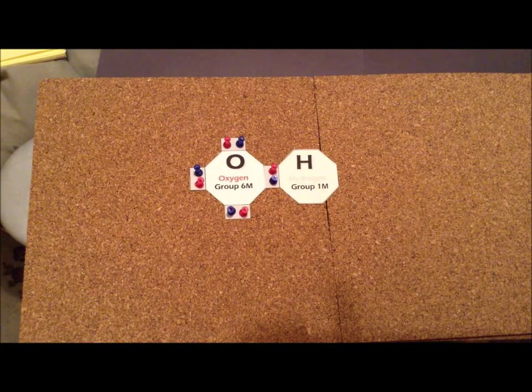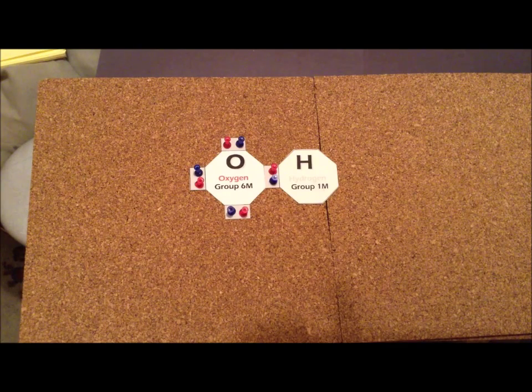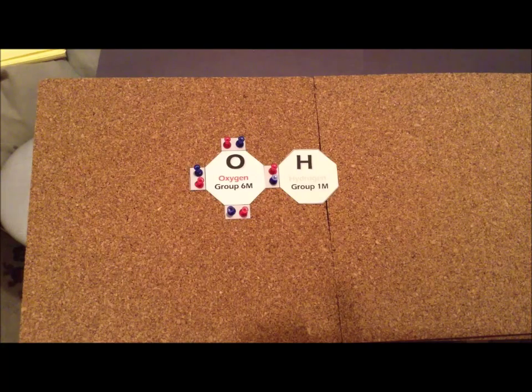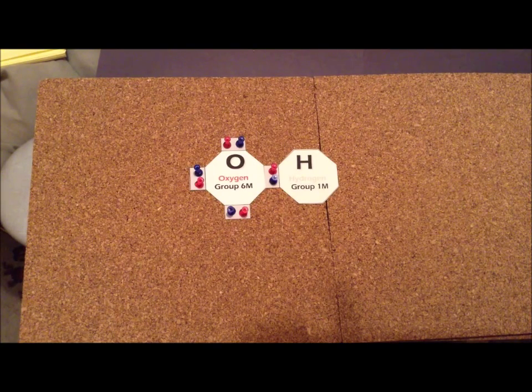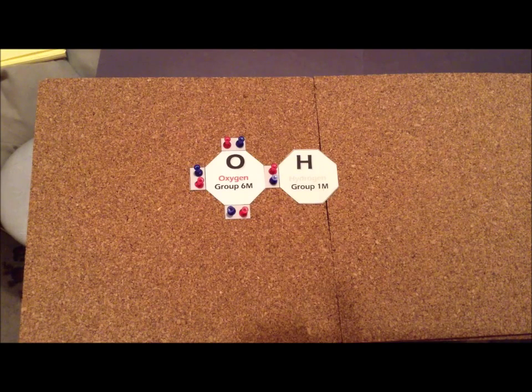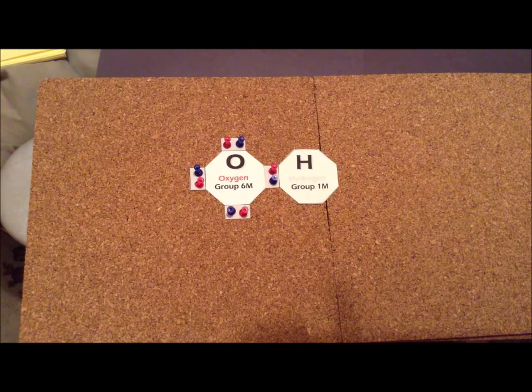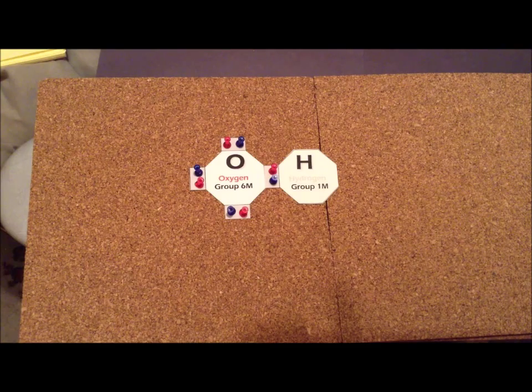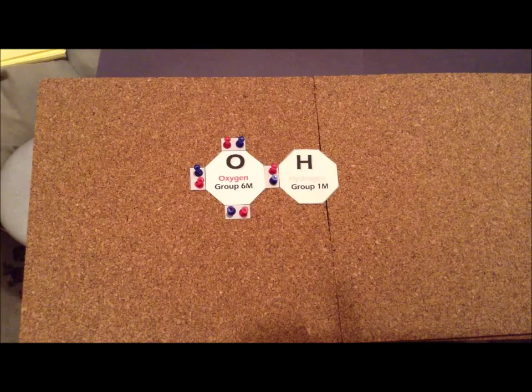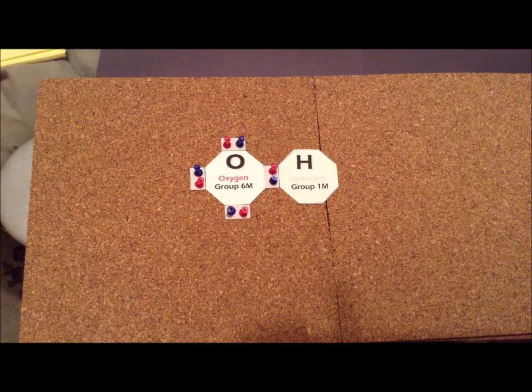For this particular ion, oxygen contributes six electrons, the hydrogen contributes one, so we have a total of seven electrons. Then we notice it has a minus one charge. For each minus one charge on the ion, we add one electron, giving us an eighth electron. Seven plus one gives eight total electrons for this system.